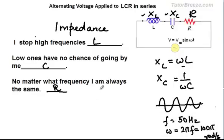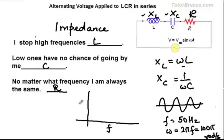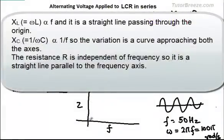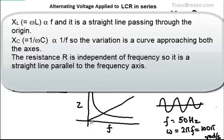On a graph with frequency on the x-axis and individual impedances on the y-axis: for an inductor you get a straight line rising upward because reactance increases at high frequencies; for a capacitor you get a curve that is very high at low frequencies and decreases; and for a resistor you get a constant horizontal line because its value does not change with frequency.